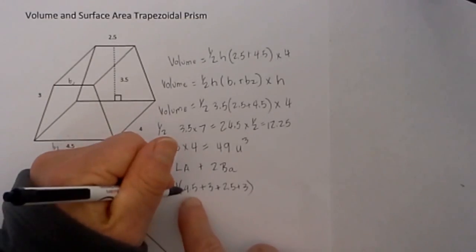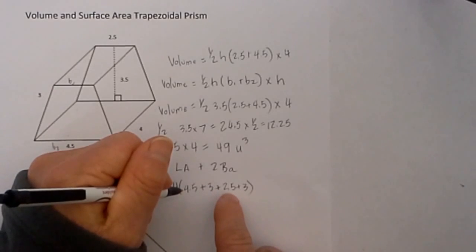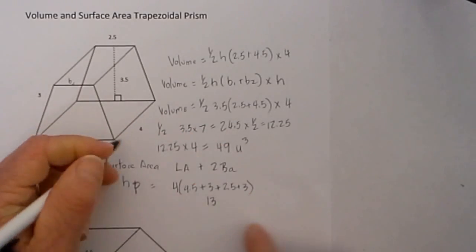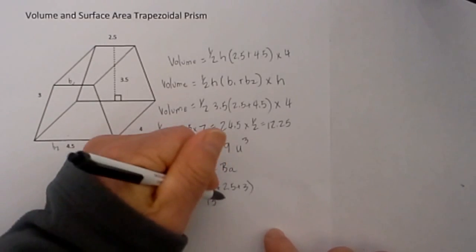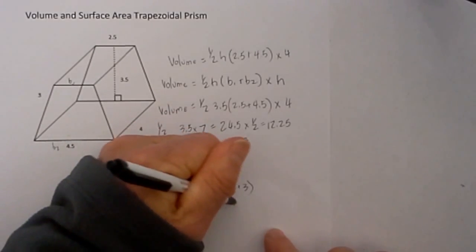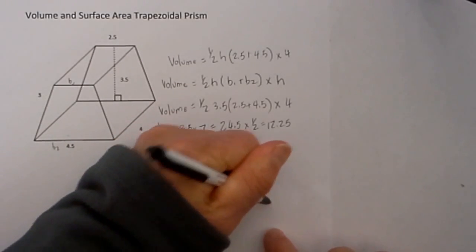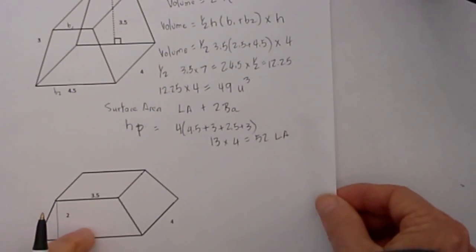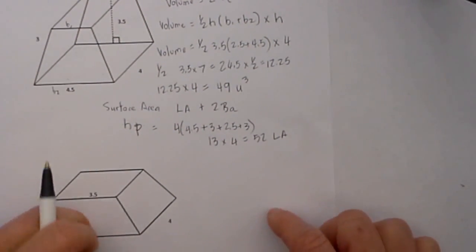So when we add this together, 4.5 plus 3 plus 2.5 plus 3 equals 13, and 13 times 4 equals 52, and that represents our lateral area. Now that is step one of finding the surface area.